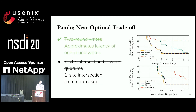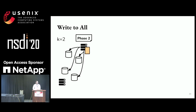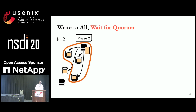Now for the intersection requirement. When Paxos executes a write, it broadcasts writes to all data sites. Here we're using erasure coding with k set to two, so we store the equivalent of one half the data on each site. We only wait for a quorum of these to succeed, and this has implications for reads.